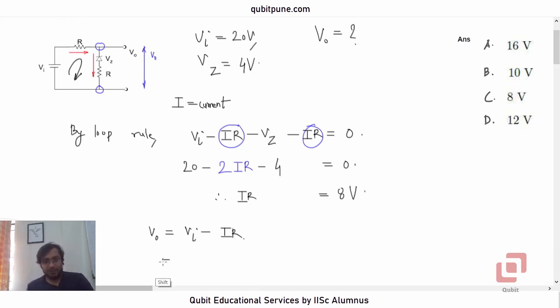Therefore, Vo is equal to Vi 20 IR 8. The answer is 12V.